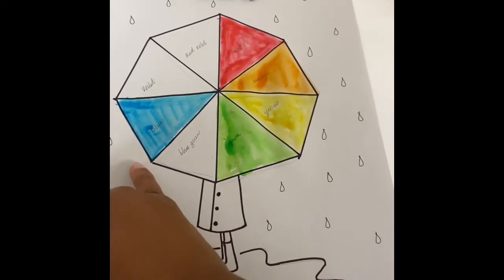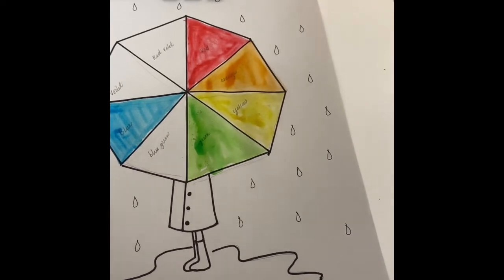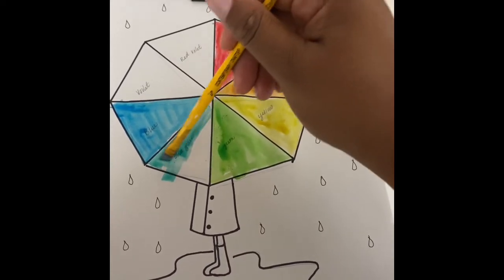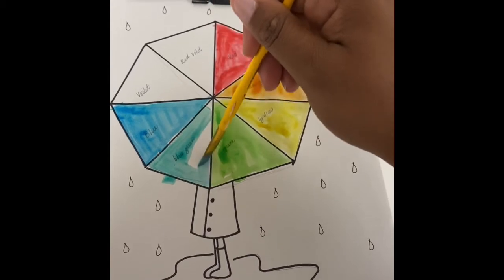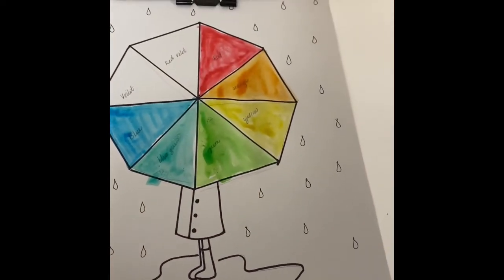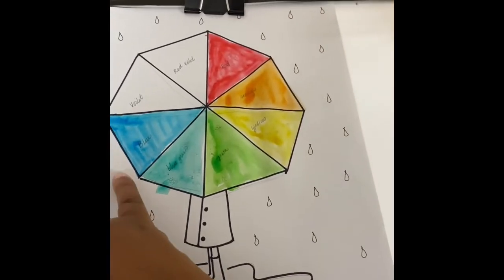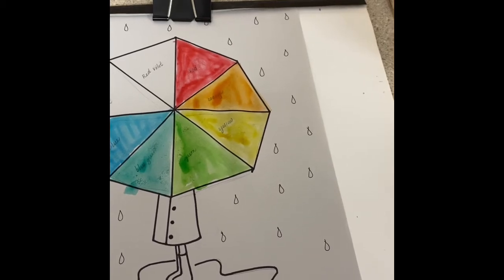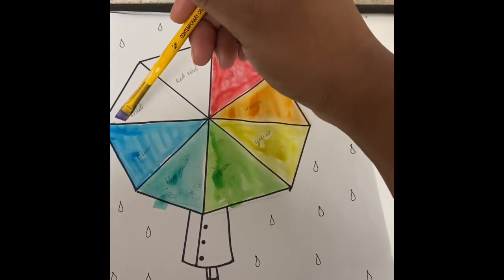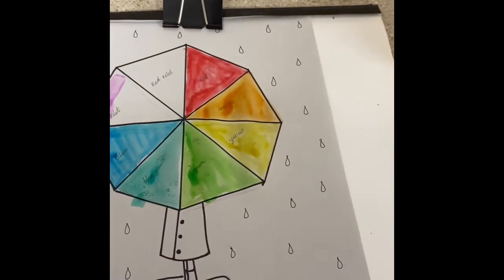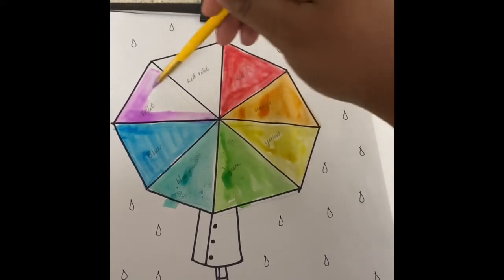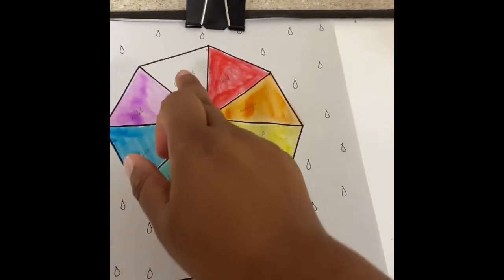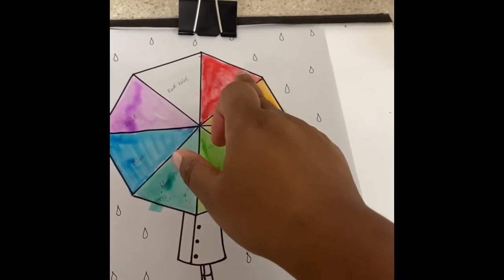Green plus blue equals blue green. We only have two more colors left, so we have blue and violet. So our violet goes here. We'll mix our violet, so you have violet red, violet red, red plus violet.